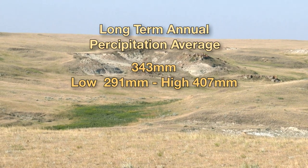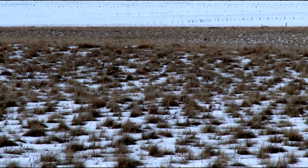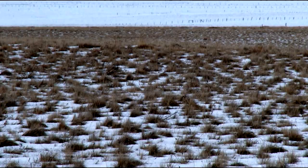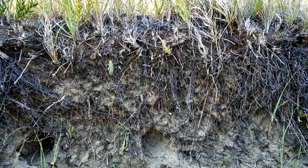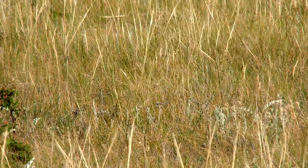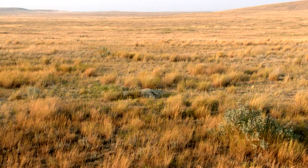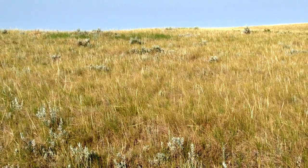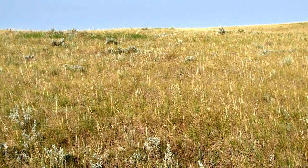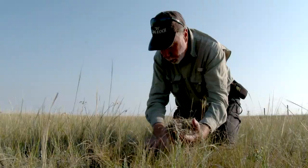Loamy range sites have medium-textured soils and generally good internal drainage and rooting characteristics. The most common loamy plant communities are dominated by species like needle and thread grass, blue grama, and June grass. Generally, the abundance of taller-growing wheat grasses increases with elevation or proximity to moist natural subregions.